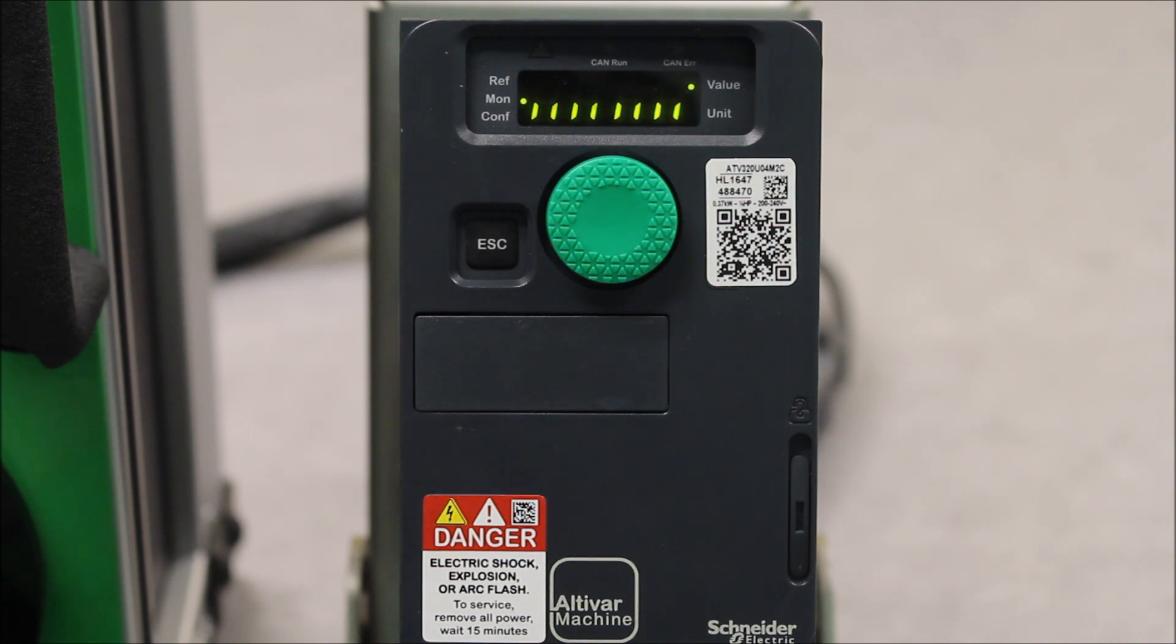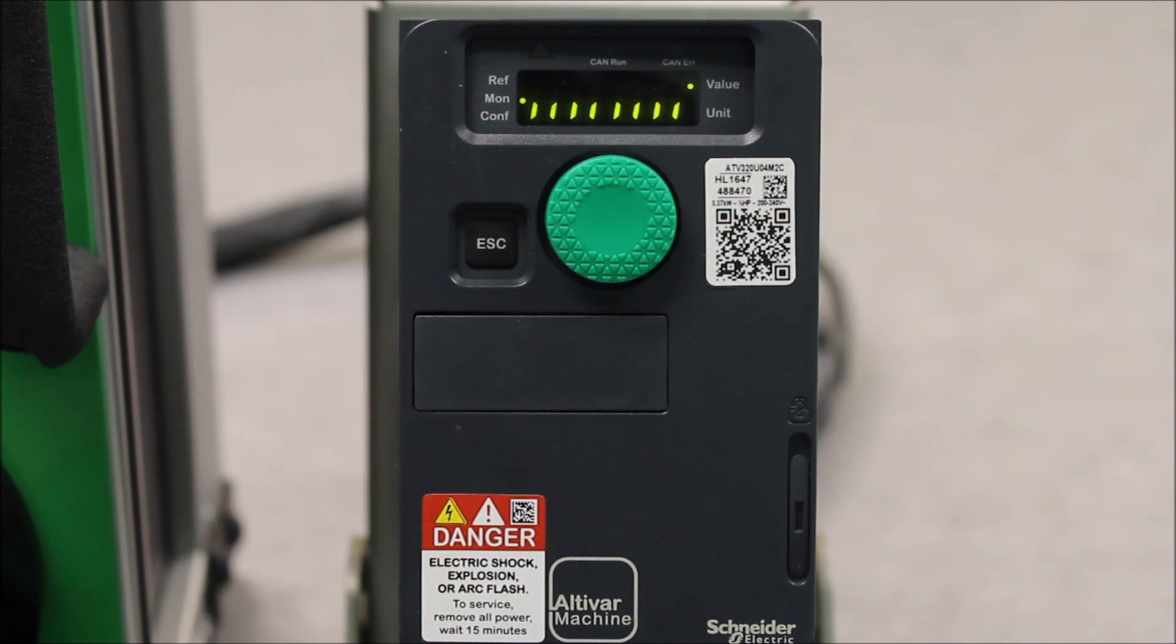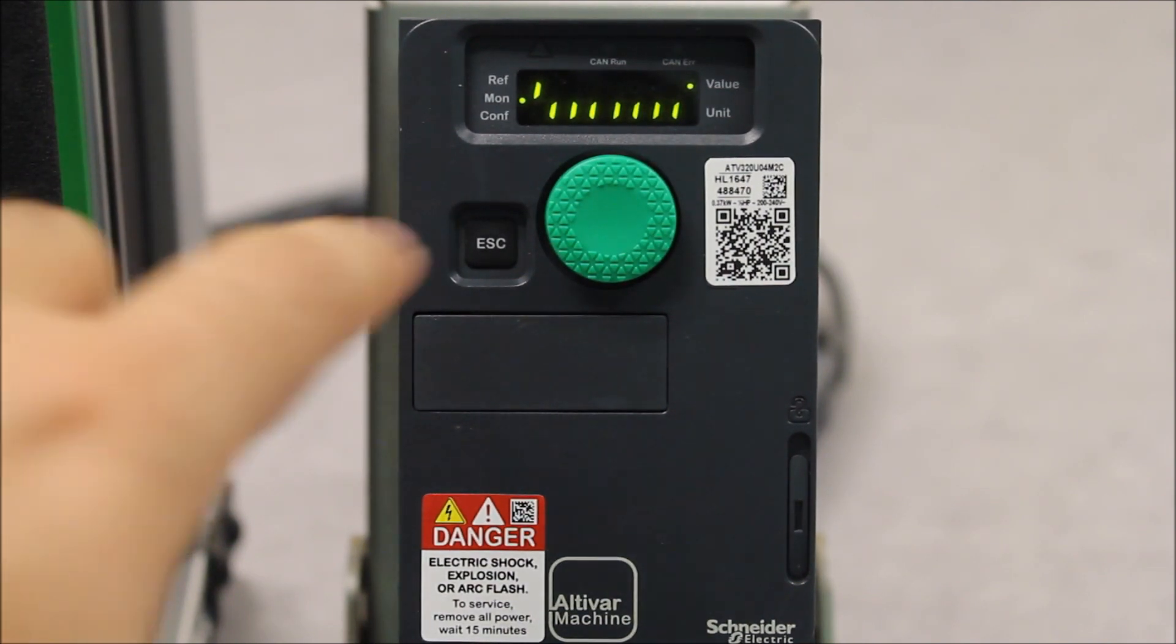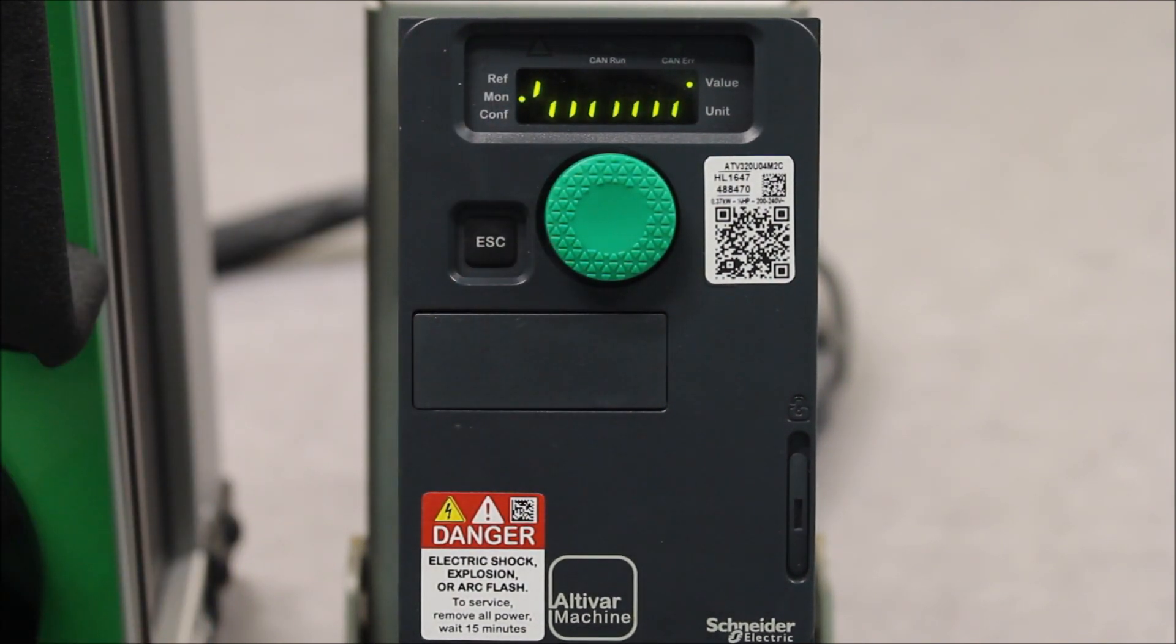Let's now turn on DI1 to turn on the motor as an example. You'll notice the very first bit goes high. That's LI1. Now if I turn off LI1 or DI1, it goes low again.